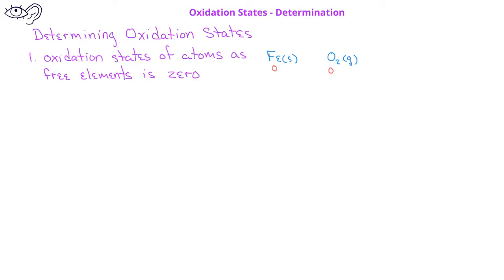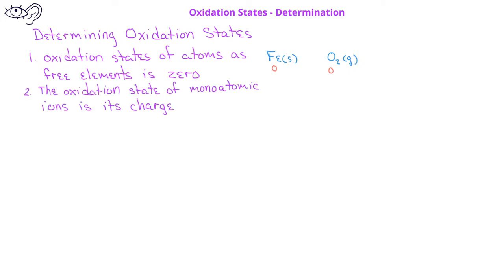The second guideline says that the oxidation state of a monoatomic ion is just the charge. So for example, the oxidation state of the chloride ion would be minus one, whereas the oxidation state of the iron(3+) ion would be plus three.